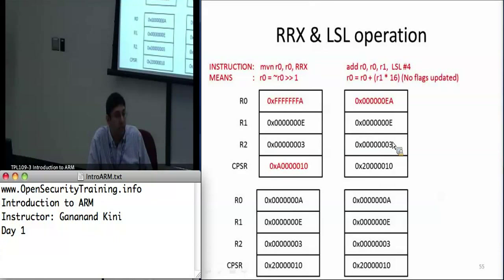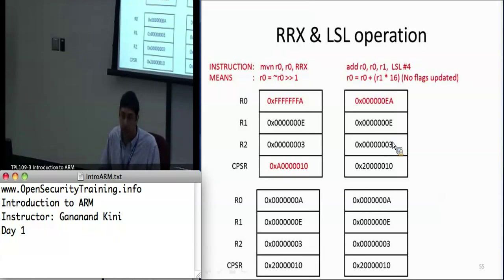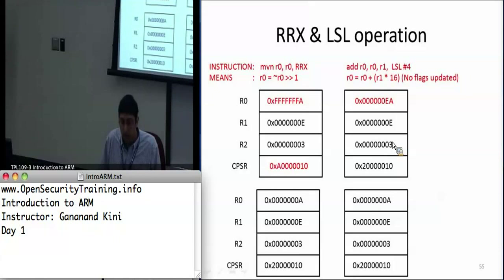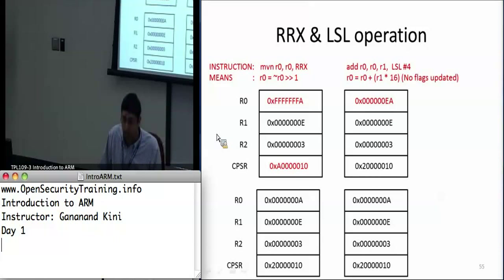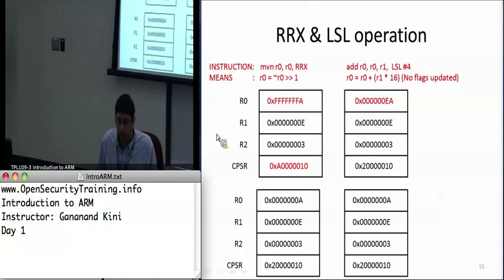For rotate right with extend and logical shift left examples, below the operation shows the before state and above shows after, with red values indicating what changed. When you do a rotate right with extend, no immediate value is specified so the default is one. Since it's a MOV with the negative complement (MVN), it takes the complement of the value in R0, shifts it right by one, and stores it into R0. The logical shift left multiplies by two to the power of four, adds it to R0, and stores back in R0.